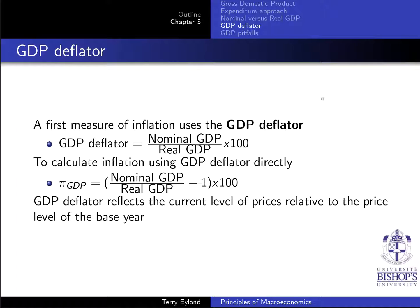So how do we find the inflation level using the GDP deflator approach? This first value gives us the GDP deflator, but what I'm really interested in is calculating inflation. This pi sign here, which is used in mathematics, can be slightly confusing. In macroeconomics, it's used as inflation; in microeconomics, it's used as profit. In this class, this pi sign will represent inflation. I write GDP here because later on I'll have inflation using the CPI approach. So using the GDP deflator approach, you have nominal over real GDP, minus one, times 100.